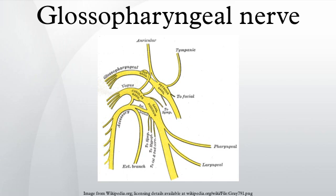Intracranial course: Upon emerging from the lateral aspect of the medulla, the branchial motor component joins the other components of CN9 to exit the skull via the jugular foramen. The glossopharyngeal fibers travel just anterior to the cranial nerves X and XI, which also exit the skull via the jugular foramen. Extracranial course: Upon exiting the skull, the branchial motor fibers descend deep to the temporal styloid process and wrap around the posterior border of the stylopharyngeus muscle before innervating it. Signals for voluntary movement of the stylopharyngeus muscle originate in the premotor and motor cortex and pass via the corticobulbar tract in the posterior limb of the internal capsule to synapse bilaterally on the ambiguous nuclei in the medulla.